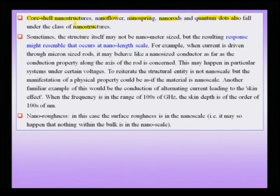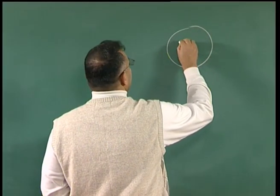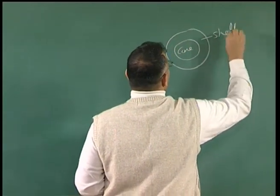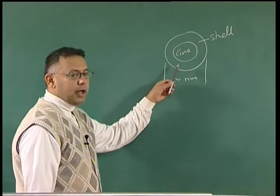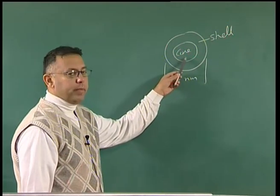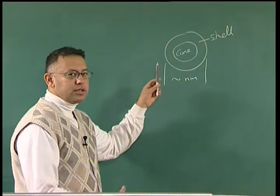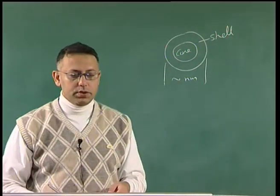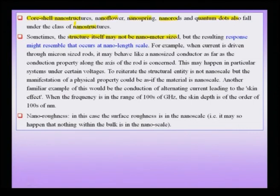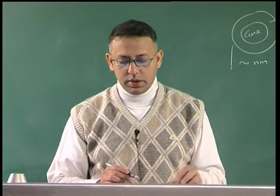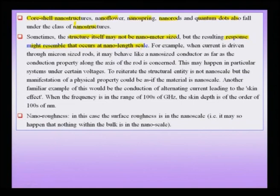In a core-shell structure, the entire length scale — the core and the shell — could be of the order of nanometers. The reason for engineering core shells will be seen later, but sometimes it is unavoidable: a core of a metal may become oxidized, giving a shell around it, and this oxidized core-shell structure may itself provide interesting properties. An important point to note is that the structure need not be nanometers for something to be classified as nano — the response of the material to a certain stimulus could be occurring at the nano scale.